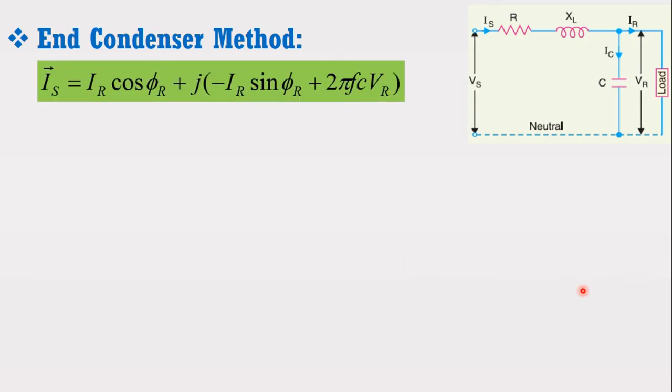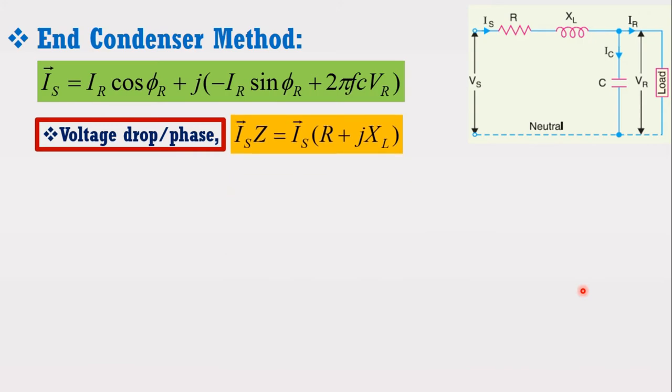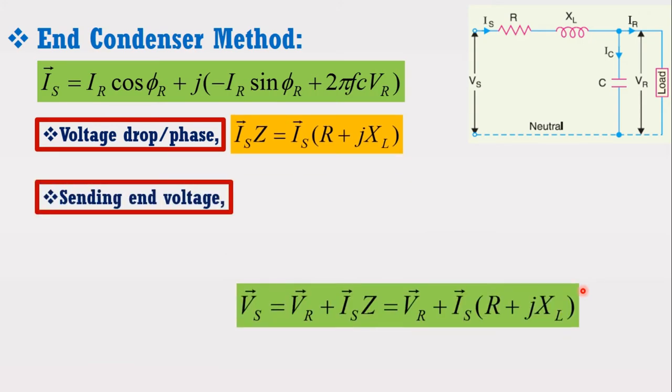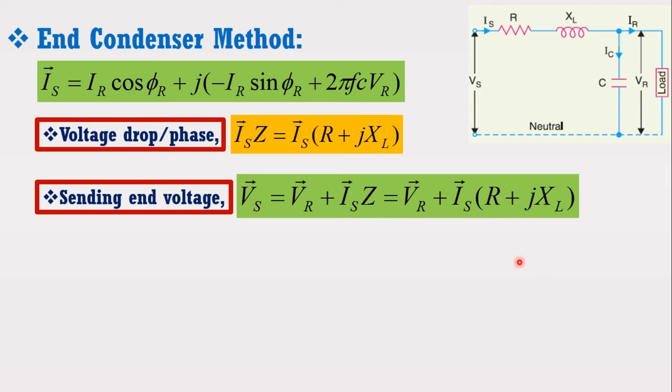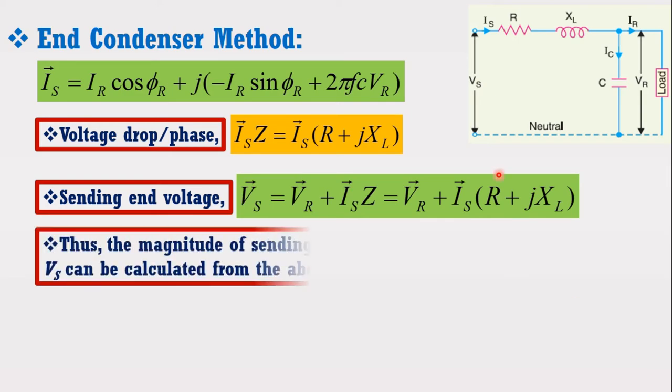Now, voltage drop per phase ISZ is given as below. Similarly, sending end voltage is given by the following expression. Thus, the magnitude of sending end voltage Vs can be calculated from the above expression.